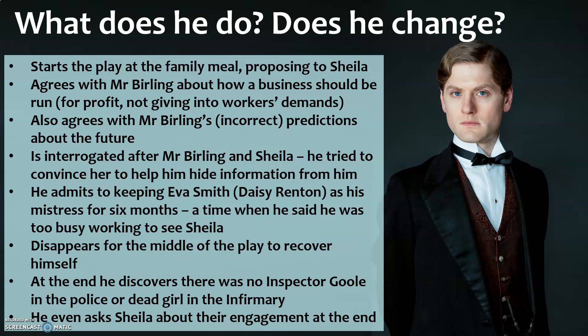There's then a big chunk where Gerald disappears after being interrogated — he goes off to recover and get over how upset he's feeling. He reappears after the Inspector has left and is the one who suggests there was no Inspector Goole. He'd been asking questions, spoke to a police officer on the street, and found there was no such inspector. He then telephones the infirmary to see if a girl has been brought in — there hasn't. At the very end, he asks Sheila about the engagement ring, implying that since it's all over, maybe they should get married after all — ignoring that he did still admit to having an affair.